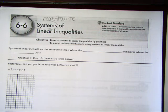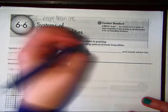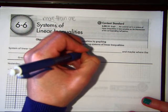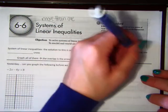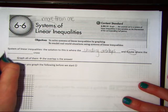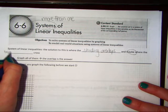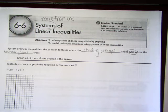All right, let's go ahead and talk about the definition of a system of linear inequalities. The solution to this is where the shading overlaps and maybe, that's an important word, maybe where the lines cross. And I'm going to put boundary lines because that's what they are.